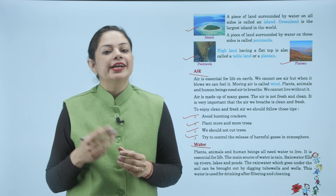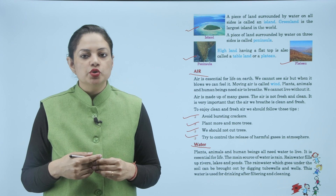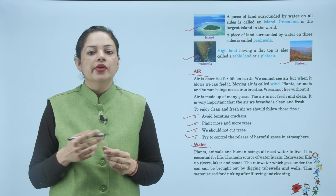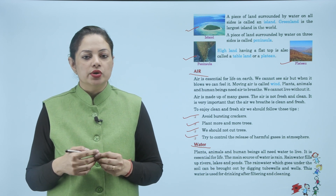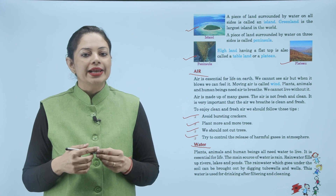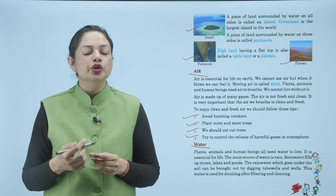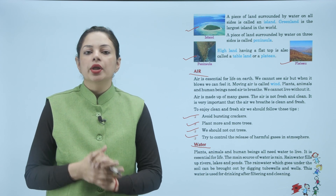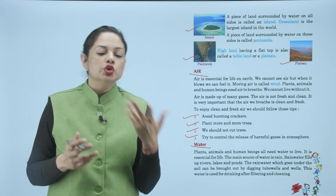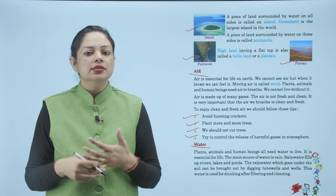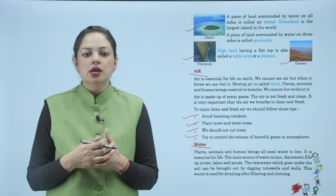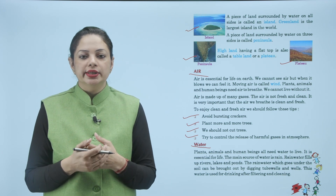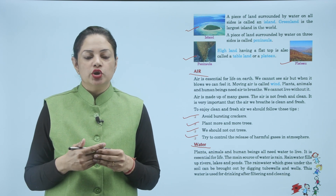Water — plants, animals and human beings all need water to live. It is essential for life. पानी भी बहुत ज़रूरी है रहने के लिए — जैसे air की ज़रूरत होती है, ऐसे ही water की ज़रूरत होती है। The main source of water is rain — बारिश जो होती है वो पानी का main source है।